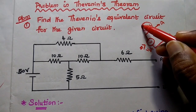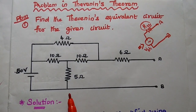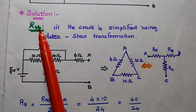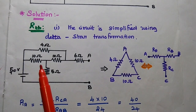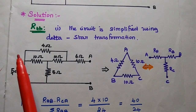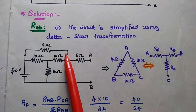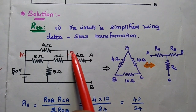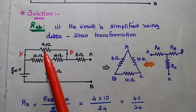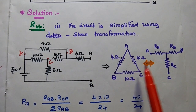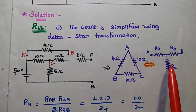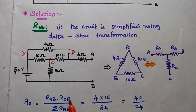This Thevenin's resistance is nothing but the equivalent resistance of this circuit. In the solution part, first we are going to find out the Thevenin's resistance. For that we can simplify the circuit step by step. In this given circuit, we can take this delta connection, and we are going to convert this delta into a star transformation, then substitute this star connection in the circuit for further simplification.